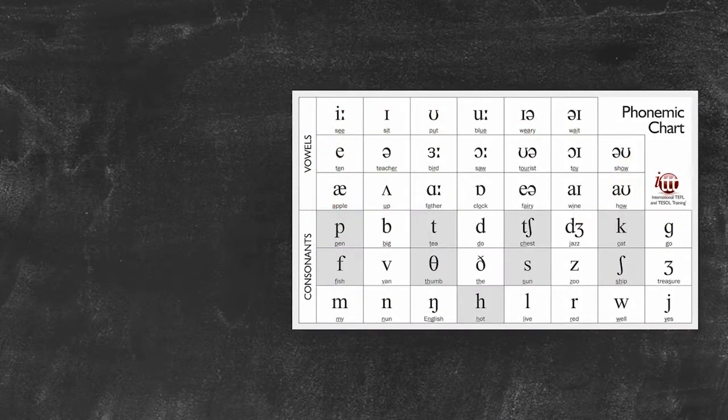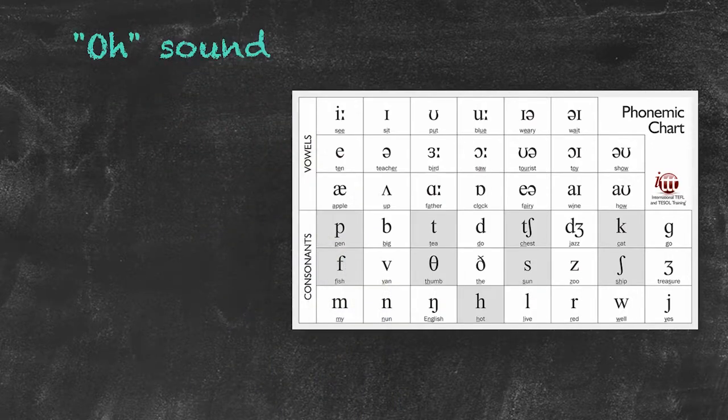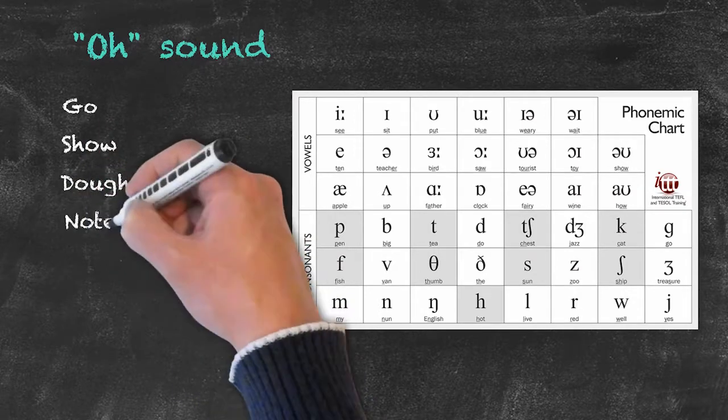Here we have a set of five words which all share one sound, the O sound as in go, show, dough, note, and boat.